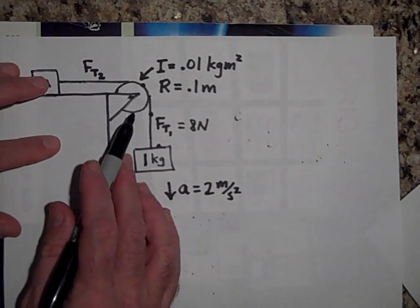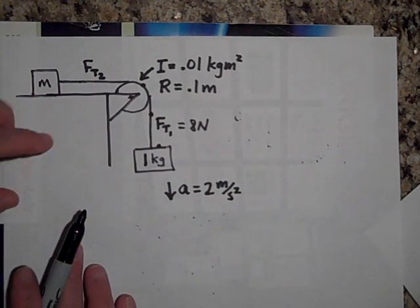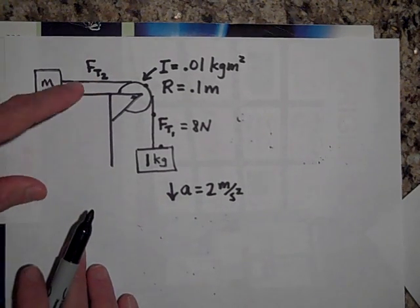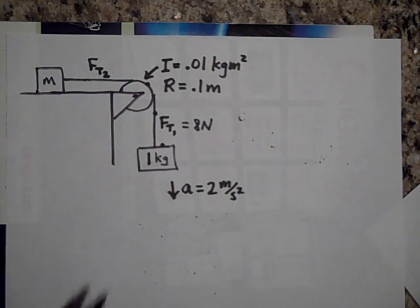If alpha is 20 radians per second squared, could you tell me what FT2 is? See if you can find FT2. Go ahead and pause.